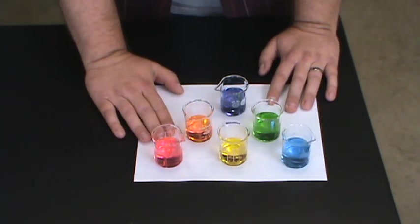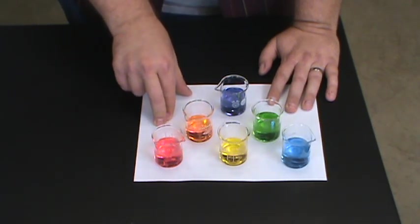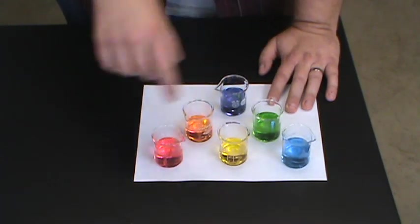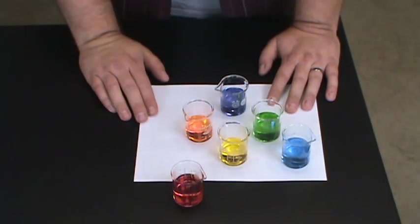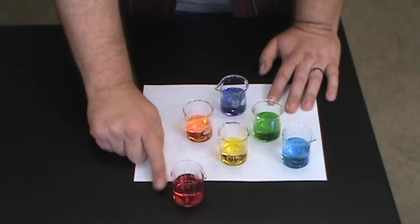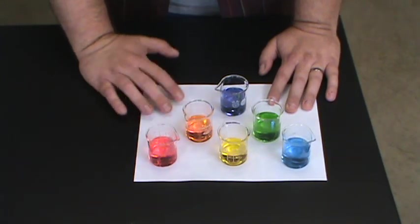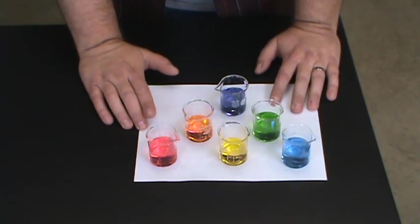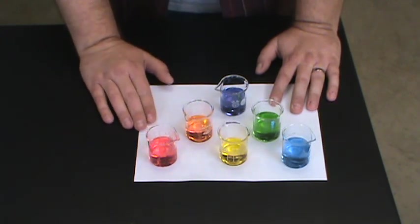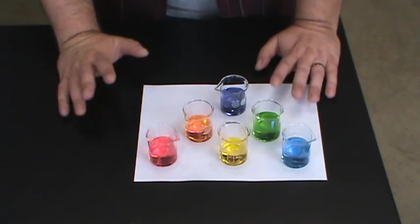Well the first thing you might notice is right now I've got all of these sitting on a white piece of paper because if I want to observe color in this case it's kind of hard to see that color when it's against the black background of the lab bench. But if I put it on the white background of just this white piece of paper it's a lot easier to see what color it is. So when you're trying to observe colors make sure you're putting them against different backgrounds so that you can see what the color really is.